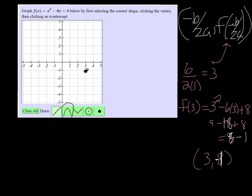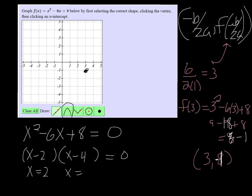And the second point they want is the x-intercept. So the x-intercept is found by taking the function and setting it equal to 0 and solving. And this can factor to x minus 2, x minus 4. So we get 2 x-intercepts. We get x equals 2 and x equals 4.